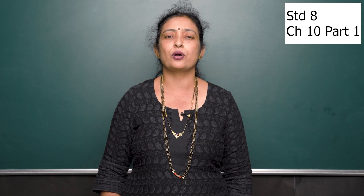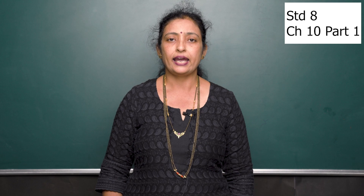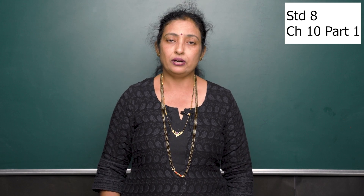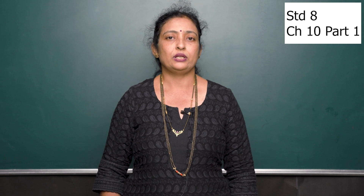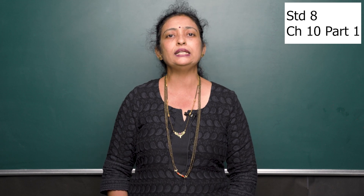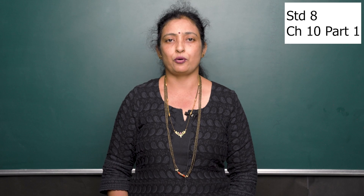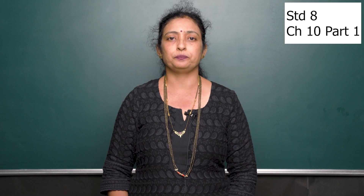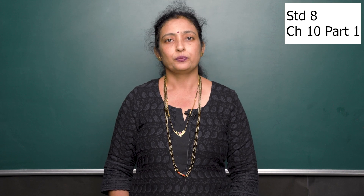With this, I have completed session 2. We have learned about the faces, edges, and vertices of 3D objects, what is a polyhedron and a non-polyhedron, and how to apply Euler's formula. Your homework is exercise 10.3 from your textbook. We have also learned what are 2D and 3D objects, the three views of a 3D object, how to draw a map of the space around you, and the differences between a map and a picture. Homework: solve exercise 10.1, questions 1, 2, 3, and 4. I hope you enjoyed this session. Have a good day. Thank you.